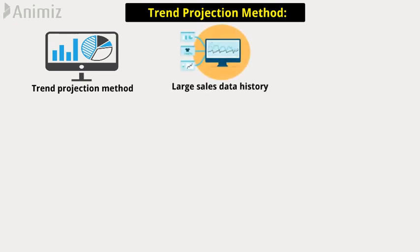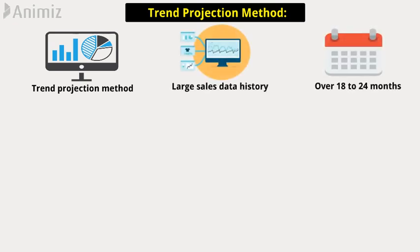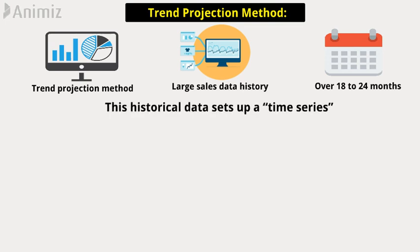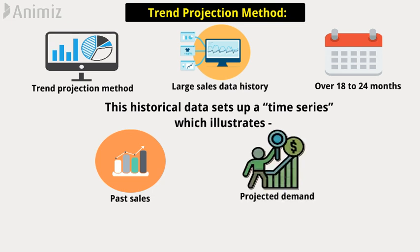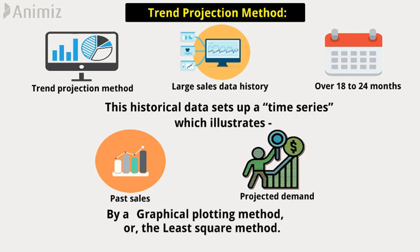Trend projection method: We can effectively deploy the trend projection method for businesses with a large sales data history of typically over 18 to 24 months. This historical data sets up a time series, which illustrates past sales and projected demand for a specific product category under normal conditions, by a graphical plotting method or the least square method.